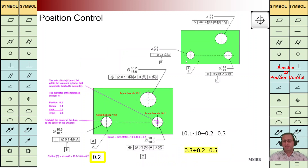Here at top we are going to have datum plane A, and datum axis B is the axis of this hole on the left hand side, and C is the axis of this hole on the right hand side. Here we are going to use two positioning controls — as highlighted here — for this hole and for this large hole at top.